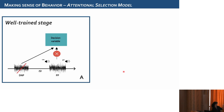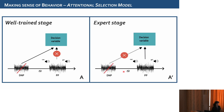To make sense of all of this, we conceptualize two possible models, consistent with two strategies the rat might be using: attentional selection and response inhibition. For the attentional selection model: during the well-trained stage, the rat loads the DNP into a short-term buffer called the decision variable on the vast majority of trials. Since this variable is already occupied by the irrelevant stimulus, the PP cannot be loaded, and the decision is based only upon the DNP. But during the expert stage, the rat learns that the acoustic cue signals the onset of the relevant stimulus, and loads only the PP stimulus, explaining the absence of the DNP effect.